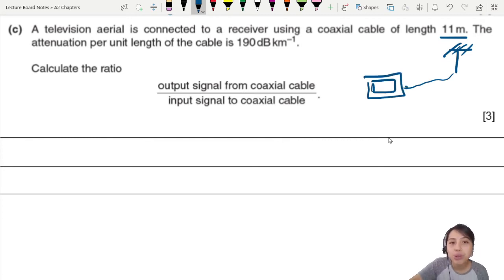Here's the TV aerial. Connect wire to TV. Already lose some signal. So the attenuation per unit length. Remember this? dB per km. Attenuation per unit length is given. So for each kilometer of wire, you will lose out 190 dB. That's quite a lot. That's a pretty big attenuation. Not very good. But we need to calculate the ratio. That's a magic word. Ratio.